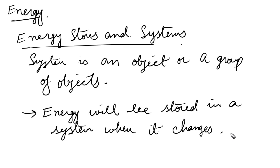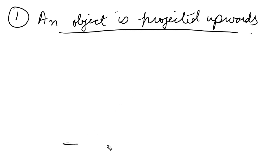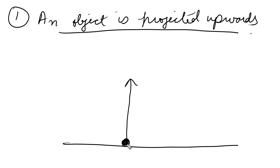Example one: let's suppose an object is projected upwards. When an object is projected upwards, we see some energy changes in that object — in this case the object is called a system. At the ground this object has zero potential energy, but when it moves upwards, at that higher position it has some energy due to its height. So this system has a storage of energy.